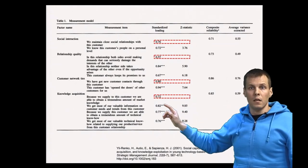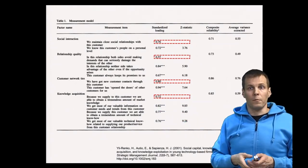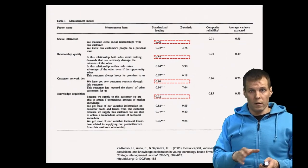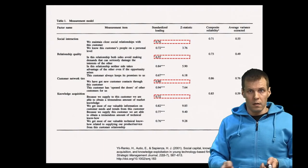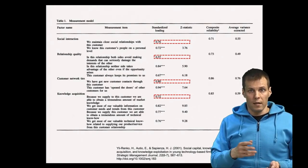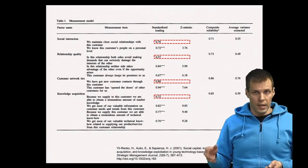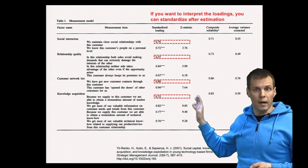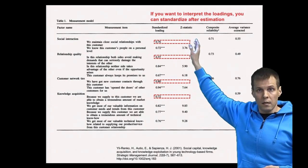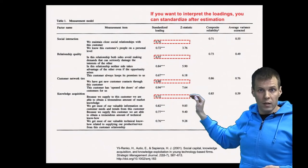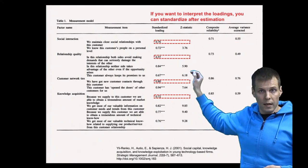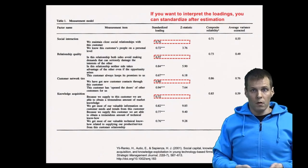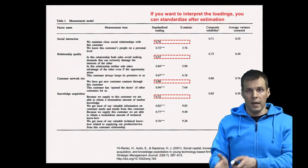If you want standardized factor loadings expressed in the exploratory factor analysis scale — where factor variances are 1 — you can rescale the confirmatory factor analysis results afterwards. Your software will produce these if you check the standardized estimates option. You first estimate an unstandardized confirmatory factor analysis with each factor scaled by fixing the first indicator, then scale the resulting solution. This is the same approach used for standardized regression coefficients: you estimate the regression first, then scale the parameter estimates.